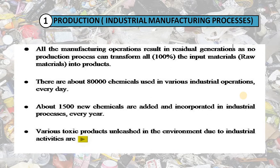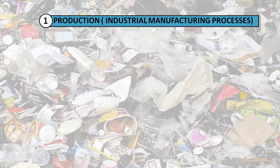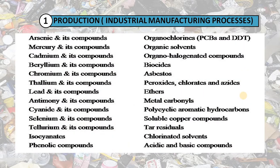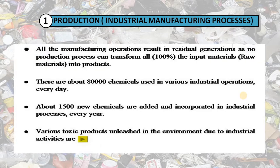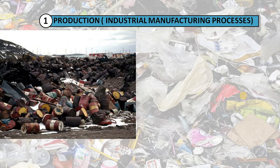Above 1,500 new chemicals are added to industries every year for manufacturing processes, and various toxic products are unleashed into the environment due to industrial activities. These toxic products include arsenic and its compounds, mercury and its compounds, cadmium and its compounds, and others listed here.